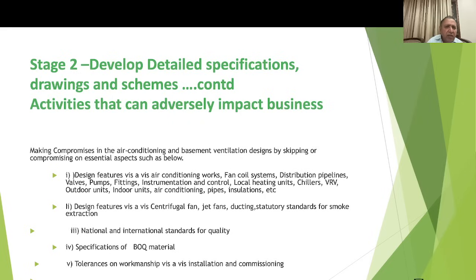Stage 2 is developing detailed specifications, drawings, and schemes. Activities that can adversely impact the business here include making compromises in the air conditioning design by skipping essential features such as fan coil systems, distribution pipelines, valves, pipes, fittings, instrumentation and control, local heating units, chillers, VRV outdoor and indoor units, and pipe insulation. For ventilation design, compromises regarding centrifugal fans, jet fans, ducting, statutory standards for heat and smoke extraction, specification of BOQ materials, and workmanship tolerances are also problematic.